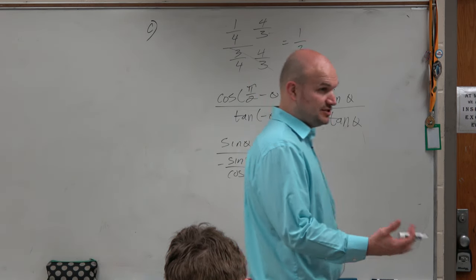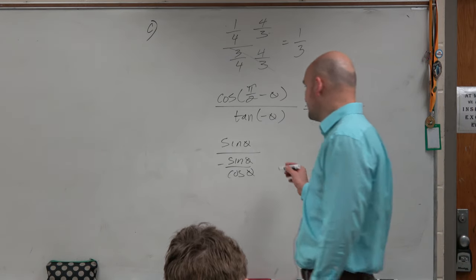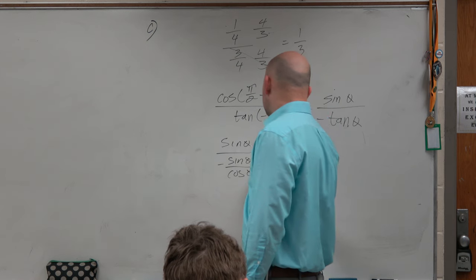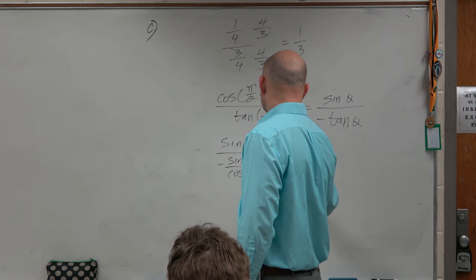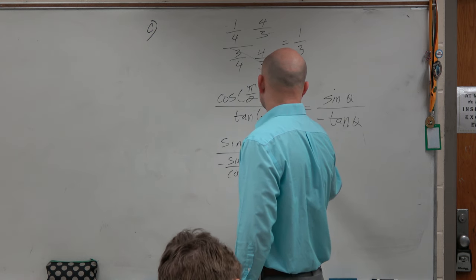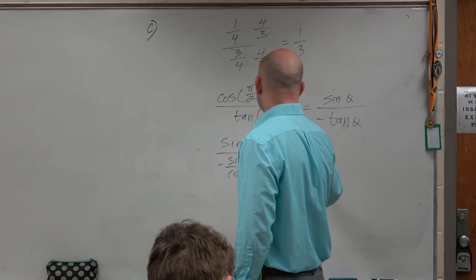And yes, if I would like to simplify this, I can multiply by the reciprocal, which would be cotangent, right? But if we just wrote it like this, do you need to include the negative symbol?